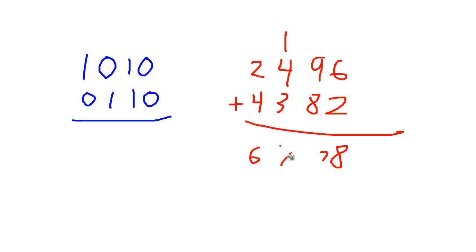Let's continue adding here. 4 plus 3 is 7 plus the carried 1 is 8, and then 2 plus 4 is 6. So, this value plus this value is this value, and let's make our 7 a little more proud to be here.